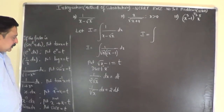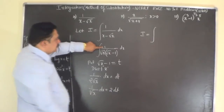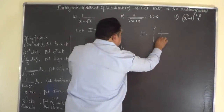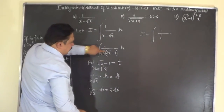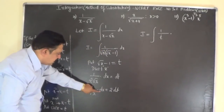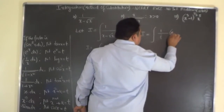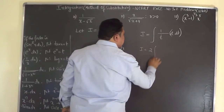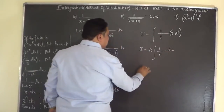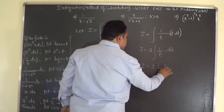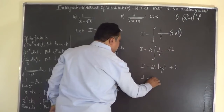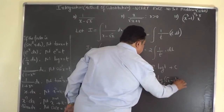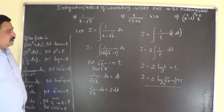Now substituting back into the problem: 1 over (√x minus 1) is 1/t, and 1 over √x dx is 2 dt. So I equals integral of (1/t) times 2 dt, which is 2 times integral of 1/t dt, giving I equals 2 log t plus C, or I equals 2 log(√x minus 1) plus C.